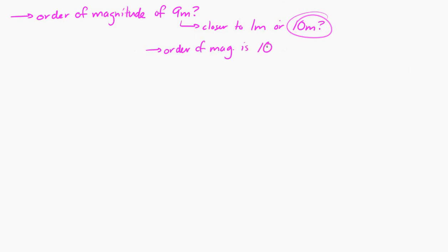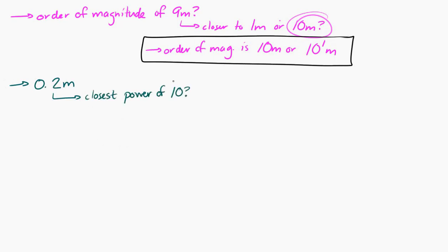If I had 9 meters, what's the order of magnitude of 9 meters? Well, that's closer to 10 than it is to 1, so that rounds up to 10 meters, or 10 to the 1 meters. Or if I had 0.2 meters, the order of magnitude of that, well, let's see. What power of 10 is 0.2 closest to? It's closest to 0.1, so that's 10 to the minus 1 meters.